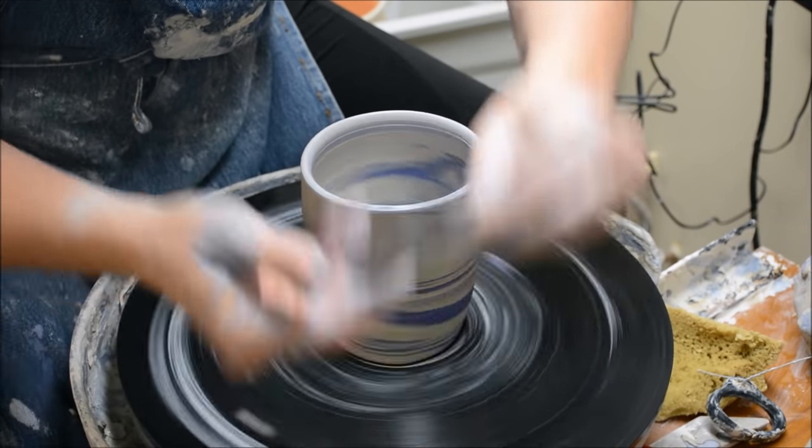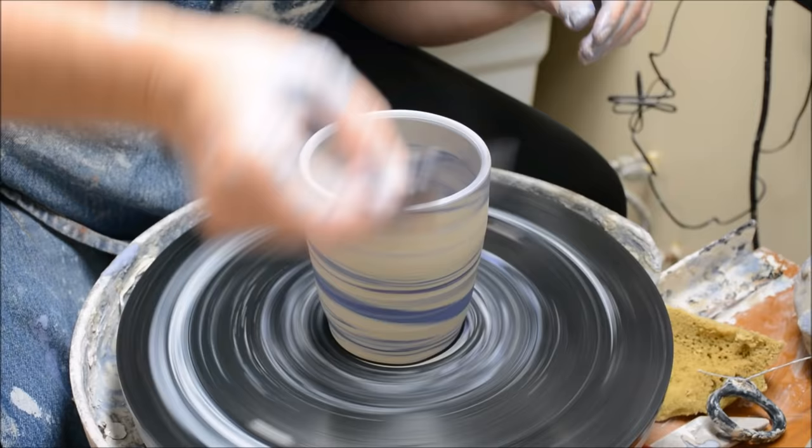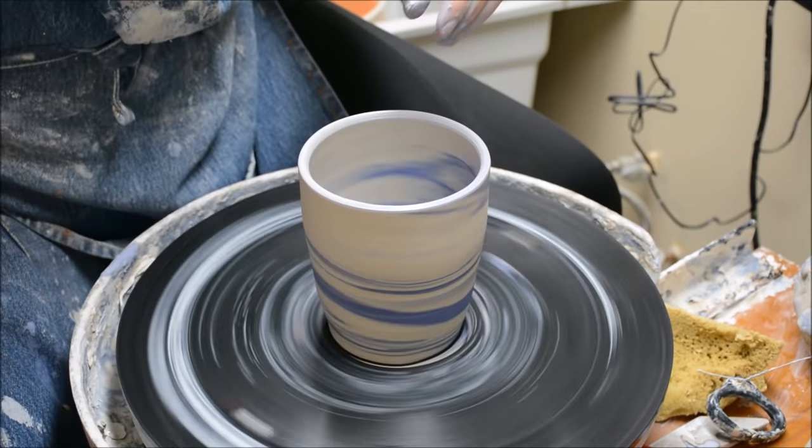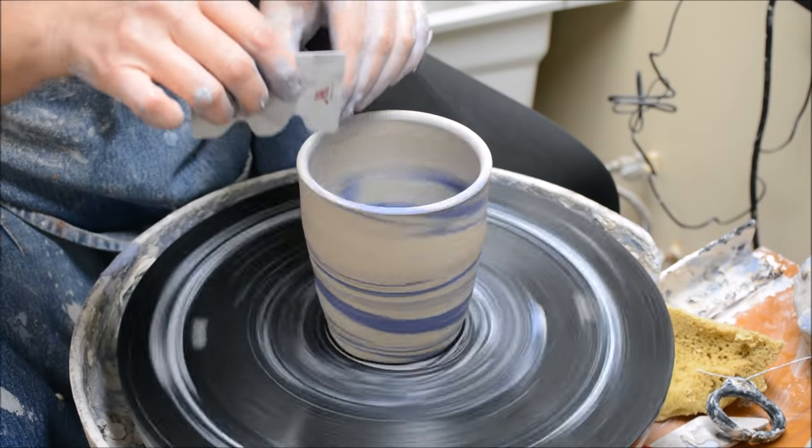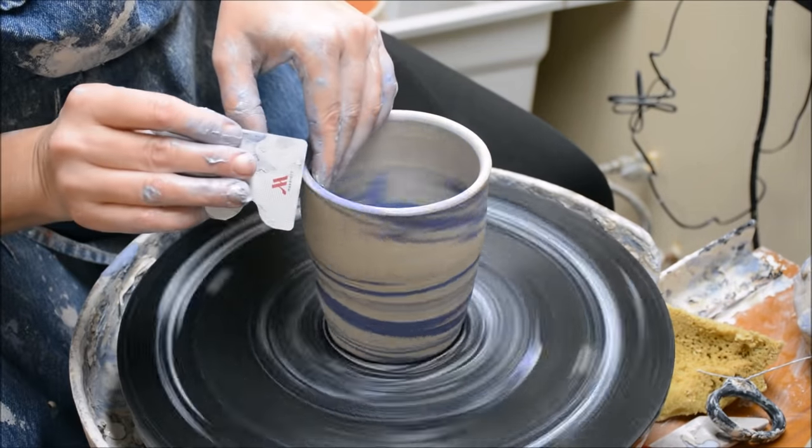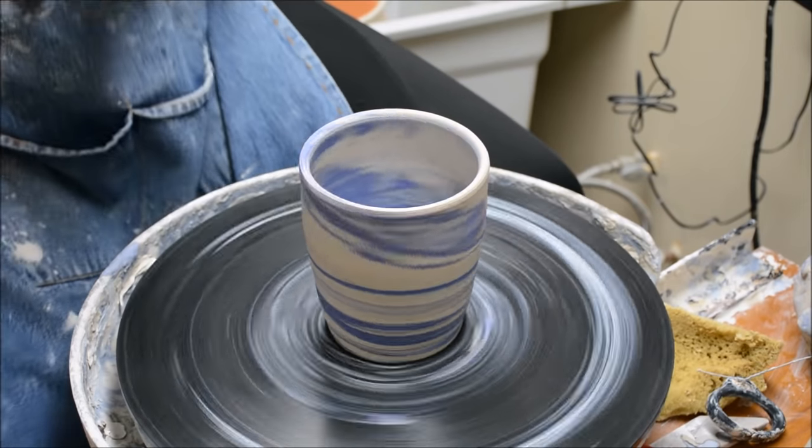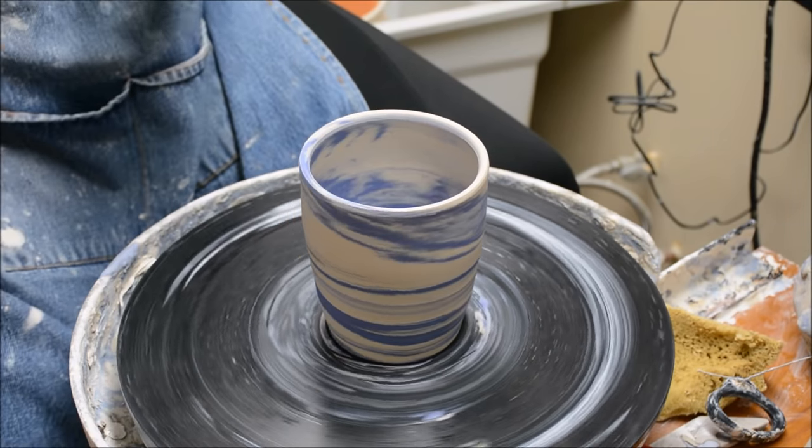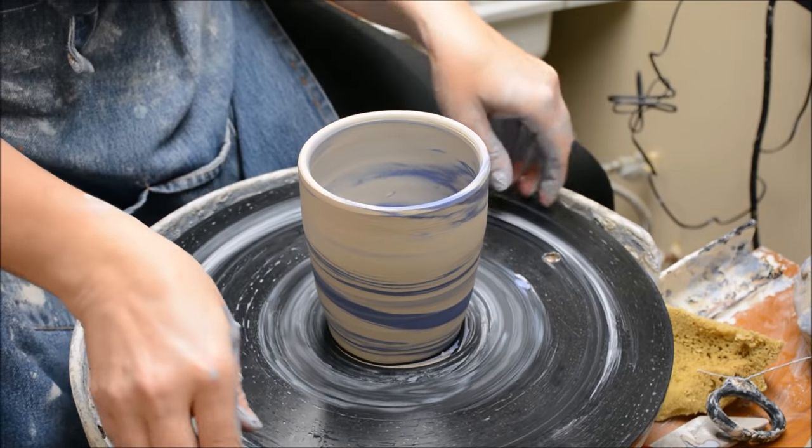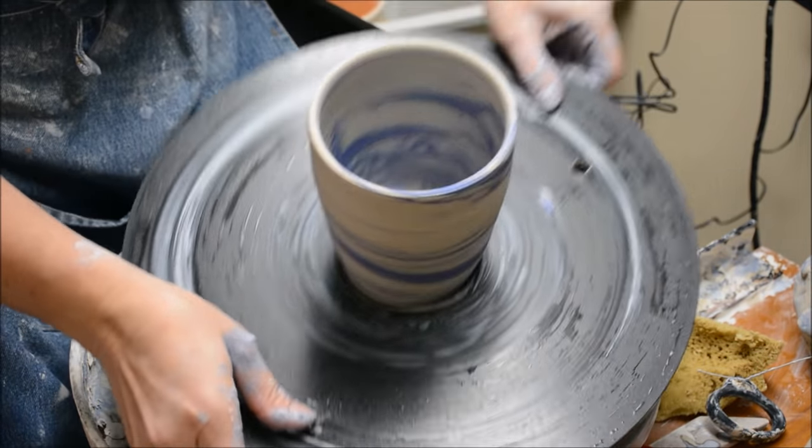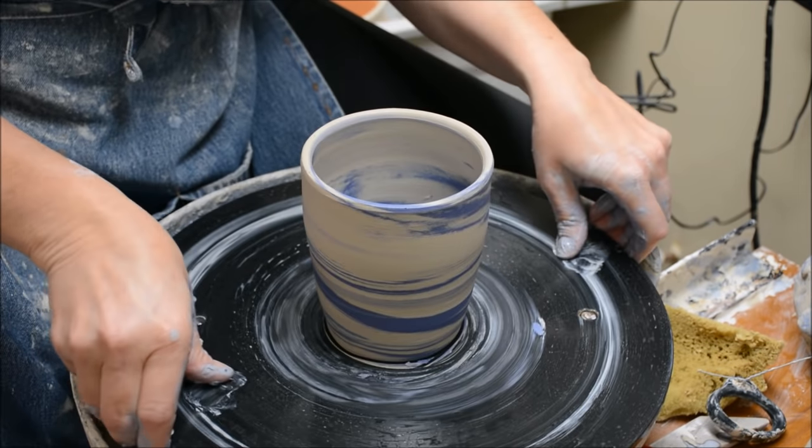When my rib gets a lot of slip on it, I definitely like to clean that off. I am able to let this dry. You can see from the interior, I've scraped away a good deal of that slip, so it's really definitely revealing the nice patterns.